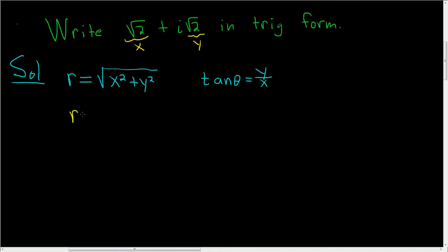Let's go ahead and find the modulus first. So R is the square root of the square root of 2 squared plus the square root of 2 squared. So the square root of 2 squared is simply 2. Likewise, here we get 2 again. 2 plus 2 is 4 and the square root of 4 is 2. So the modulus, R, is equal to 2.